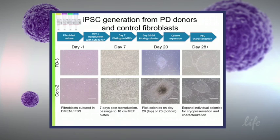Here you see the workflow using the Sendai. You plate your fibroblasts at different cell densities — we used 50,000 to 200,000 cells — then transduced the cells with Sendai. Those cells were cultured for seven days in DMEM FPS media. After seven days, we replated those cells on inactivated mouse embryonic feeders and switched to hESC media. By day 20 or so we started to see colonies, and we picked individual colonies between day 20 and 26, expanded them, and then further characterized those IPS cells.